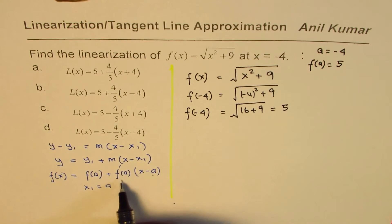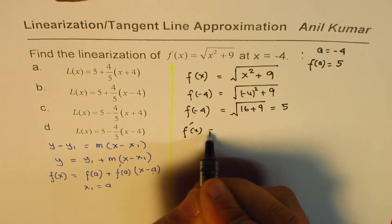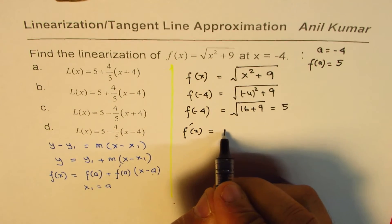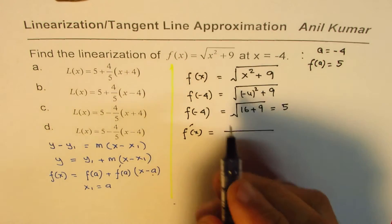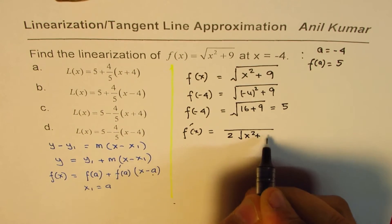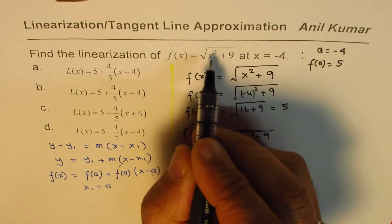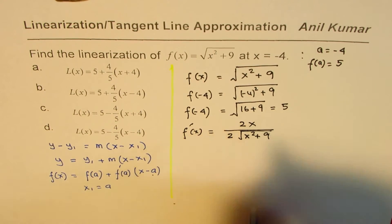Now we need to find the derivative. So f'(x) is equal to 2x over 2 square root of x squared plus 9. So that's the derivative.